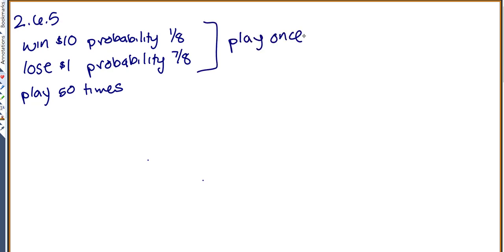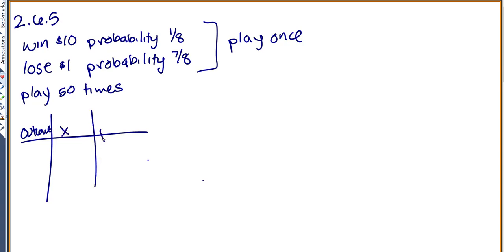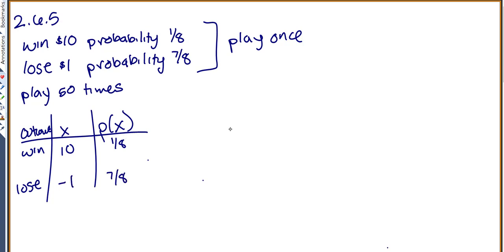So the first step is to make a little chart with the outcome, the x value, and the probability of that x value. You either win or lose. If you win, you get $10 with a probability of 1/8. If you lose, it's minus $1 with a probability of 7/8.